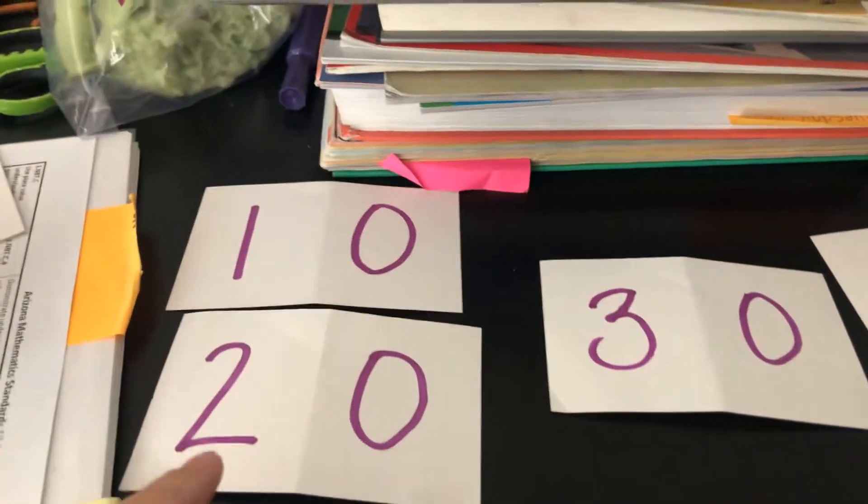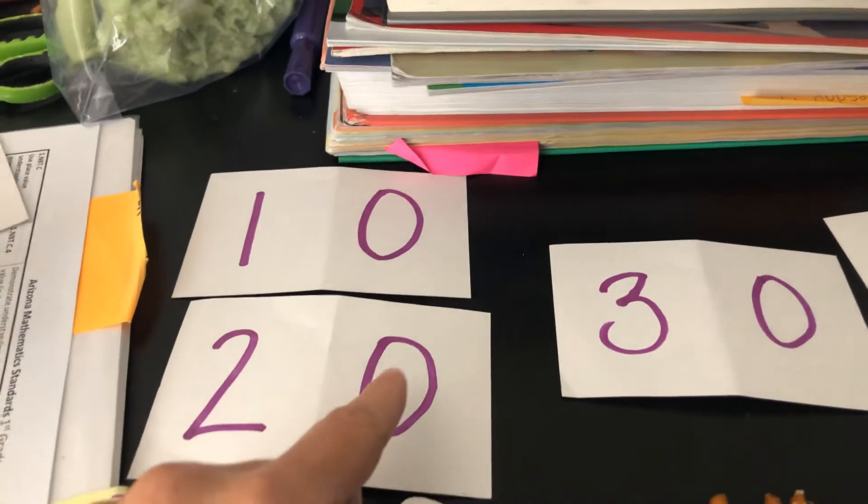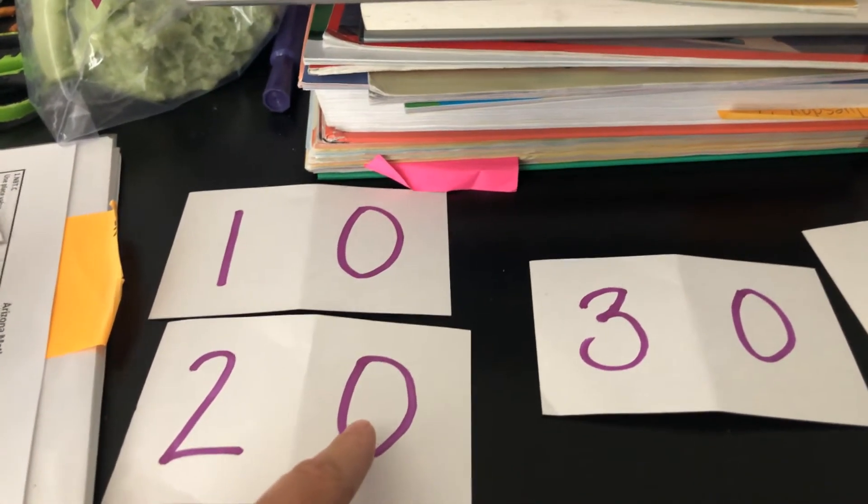And when I did it, I just made sure that I wrote how many tens on one side of the fold on the left side and how many ones on the right side of the fold.